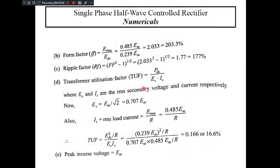The form factor = ERMS/EDC. Substituting the values, we get approximately 2.03, or 203 percent. The ripple factor = √(form factor² − 1) = approximately 177 percent. For the transformer utilization factor (TUF) = PDC/(ES × IS), where ES is the RMS secondary voltage and IS is the RMS secondary current. ES = Em/√2 and IS = ERMS/R. Making these substitutions gives TUF ≈ 16.6 percent. The peak inverse voltage (PIV) for a half wave rectifier is Em.